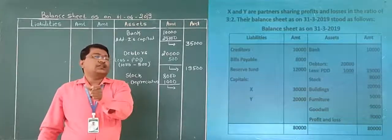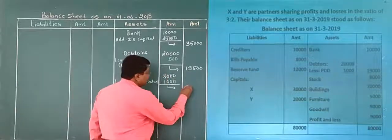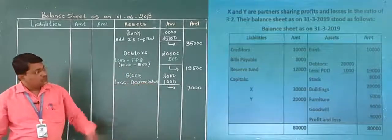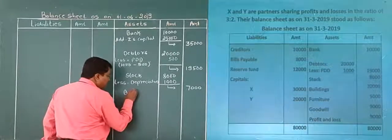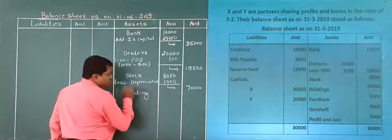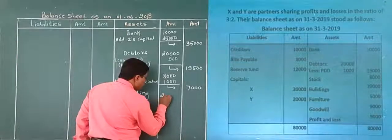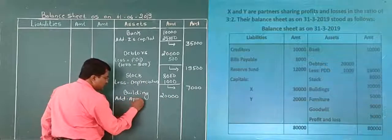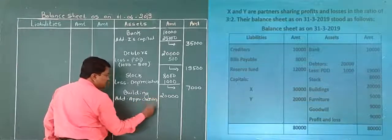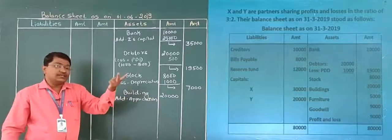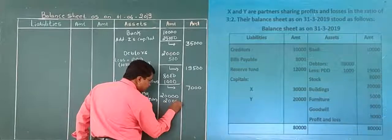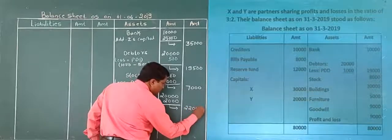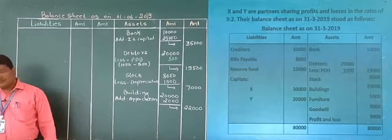Next is building. The building amount is 20,000 and there is 10% appreciation as given in the revaluation account. Ten percent appreciation means an increase of 2,000. So the building value increases to 22,000.